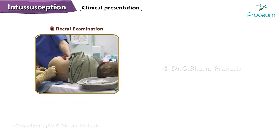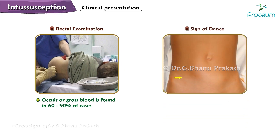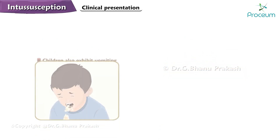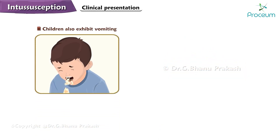On rectal examination, occult or gross blood is found in 60 to 90% of cases. The Sign of Dance refers to an empty feeling in the right iliac fossa. Children may also exhibit vomiting, initially non-bilious, which can become bilious as the obstruction progresses.